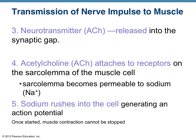Once ACH, the neurotransmitter, is released into the synapse, it flows across to the sarcolemma — which is the cell membrane of the muscle cell — and attaches to specific receptors on the surface of that muscle cell. What that does is it allows the sarcolemma to become permeable to sodium, and then sodium rushes into the cell. That action generates a new action potential in the muscle fiber itself. It's the rushing in of the sodium ions that creates the electrical signal, or the new action potential, in the muscle fiber.